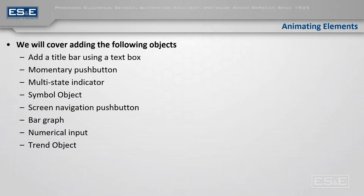The reason I wanted to cover the symbol library is that it's not as easily found as the symbol factory in Machine Edition, so I want to make sure you know where to navigate to find it. Then we will be adding screen navigation push buttons and moving to a secondary screen where we are going to add a bar graph, a numerical input, and a trending object in which we are going to trend two separate pens or two different points.